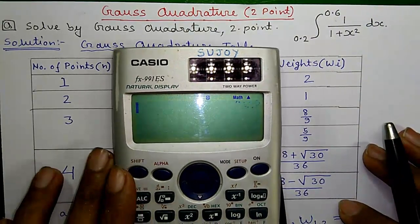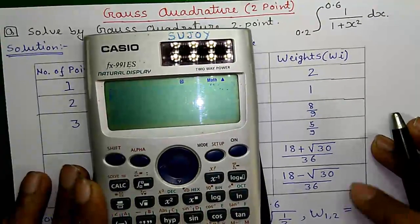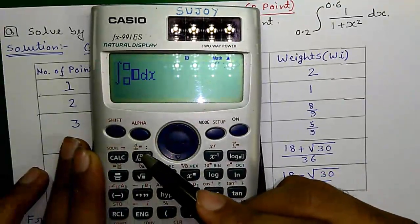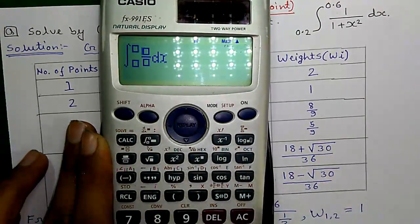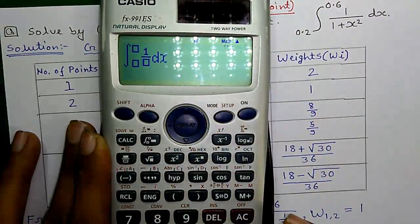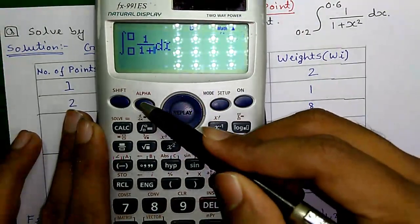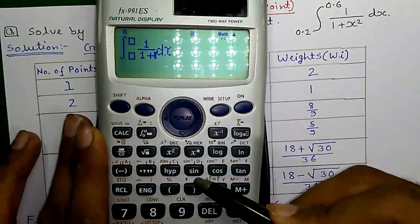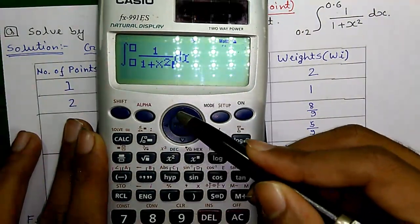So, first let me show you solving it directly. For that, press this integration button, then press this fraction button, 1 divided by 1 plus, press alpha and this button for x and this button for square.